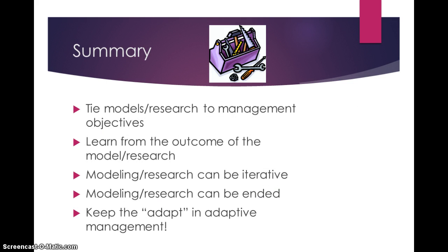In summary, there is help in making decisions in the adaptive management process through modeling and research. When using these tools, always link your modeling and research needs to their value in the decision-making process. Discuss how proposed modeling or research is tied to the project objectives, and share the objectives with scientists. Inform modelers or researchers of how you will use their products before they design or develop them. Learn from the outcomes of the model or research. If you lose confidence in the model or research being done, document it, change it, or end it as appropriate, and then move on. Not all research is useful in all projects. And above all, keep the ADAPT in adaptive management.